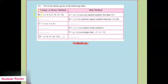Students, now let's solve this example. This example is in your textbook, page number 3. So here I am reading this question — pay attention. Fill in the blanks given in the following table. Now here in this table, the left-hand side has the listing or roster method, whereas the right-hand side has the rule method.